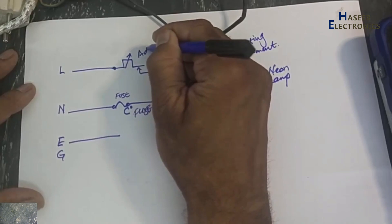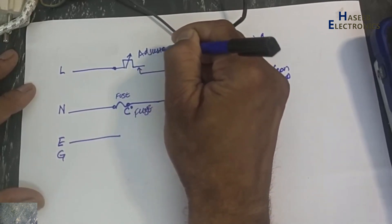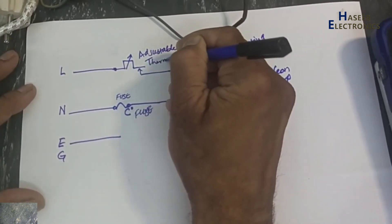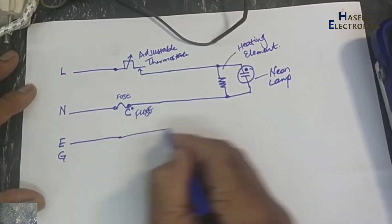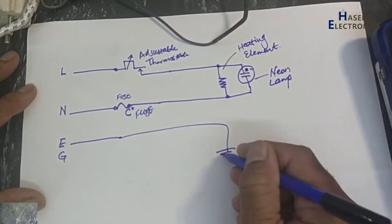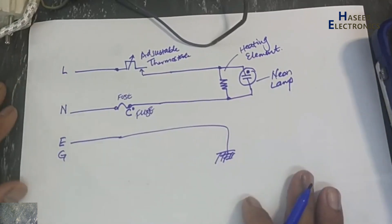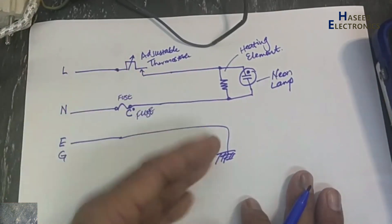And this is the adjustable thermostat. Chassis ground. This is the wiring diagram of this circuit.